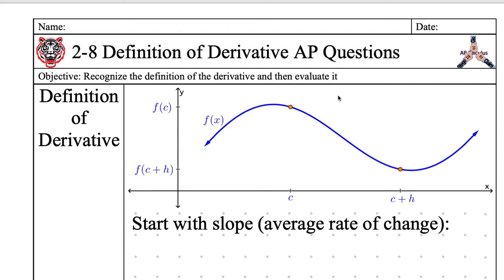Alright, we are back. AP calculus, Monday, September 23rd. Write down your date, 9-23-19, name and date. Yeah, definition of derivative, we're talking about the AP questions that we have today.